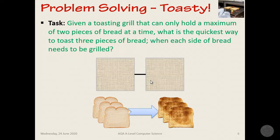So on the subject of problem-solving, there's a little task here that I'd like you to have a go at. You have a toasting grill, which is represented by these two squares here, and you can only hold a maximum of two pieces of bread at a time. You need to determine the quickest way to toast three pieces of bread when each side needs to be grilled. So we've got a piece of bread here that needs to be grilled one side, and then you'd flip it over to grill it on the other side. Pause the video and take some time to analyze and attempt to solve this problem before you continue.